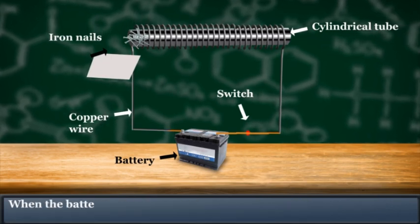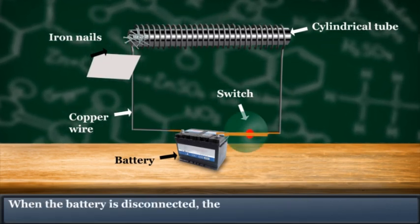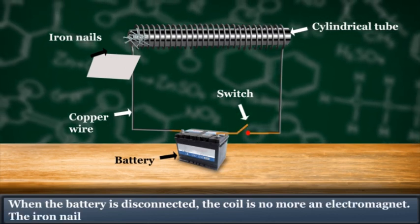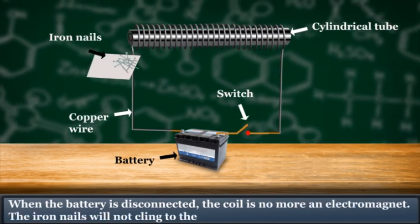When the battery is disconnected, the coil is no more an electromagnet. The iron nails will not cling to the coil.